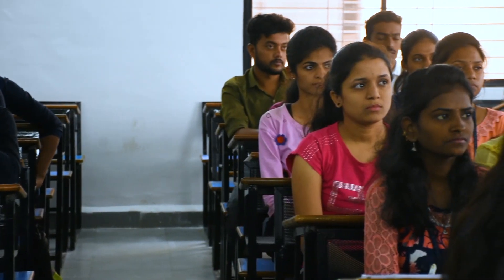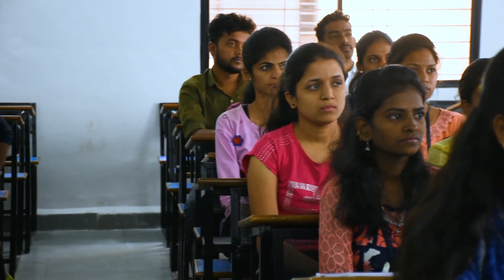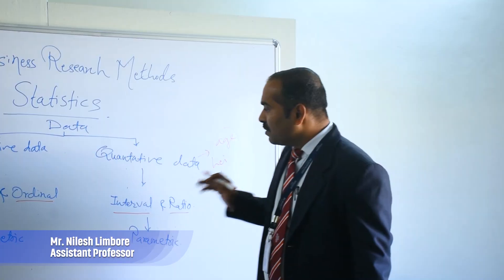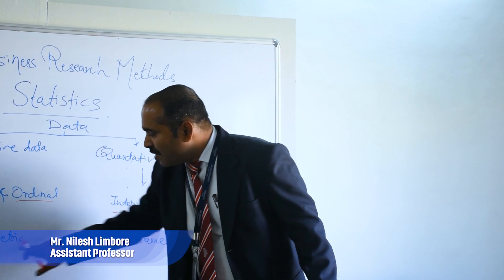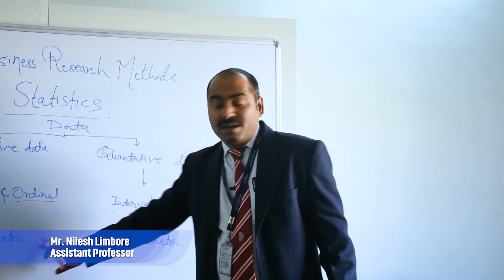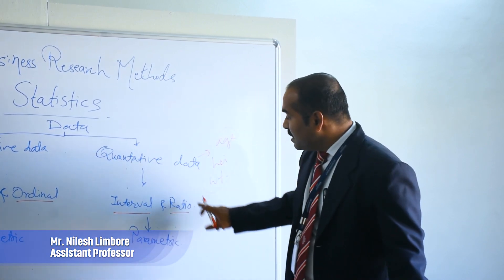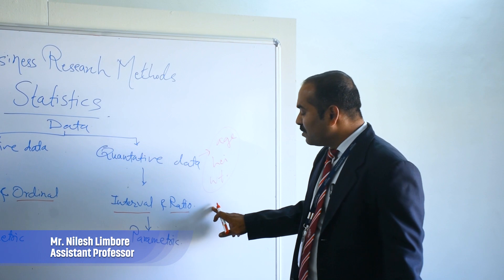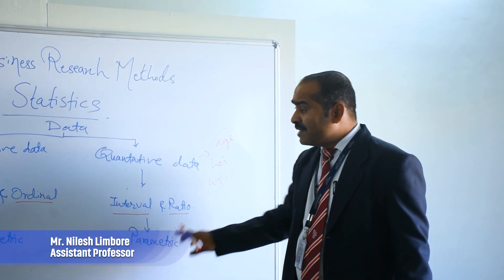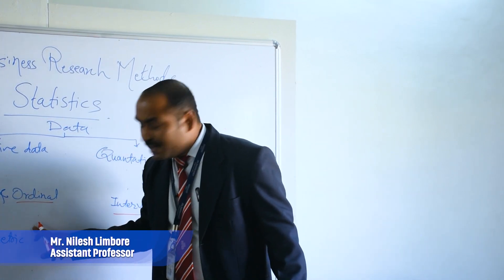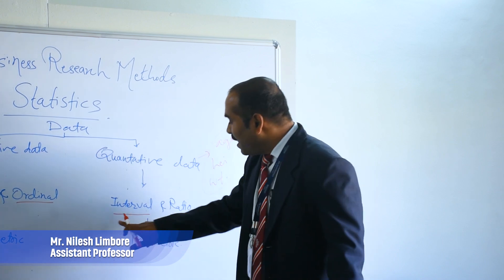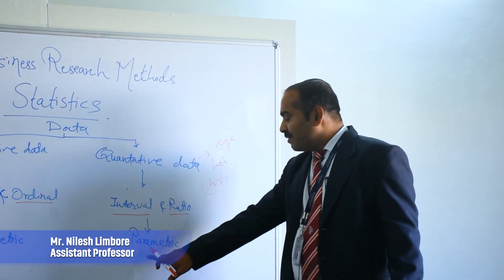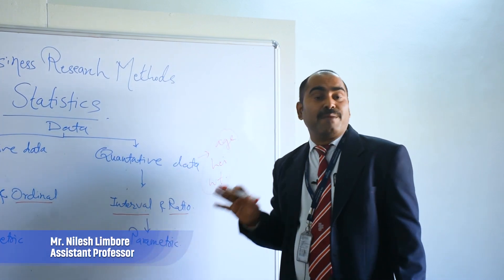Both qualitative and quantitative data are distributed across four scales: nominal, ordinal, ratio, and interval. Nominal and ordinal data belong to non-parametric data, while interval and ratio data belong to parametric. This means for nominal and ordinal data we can apply non-parametric tests only, and for interval and ratio data we can apply only parametric tests.